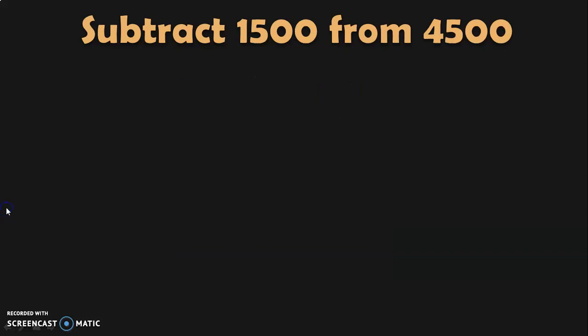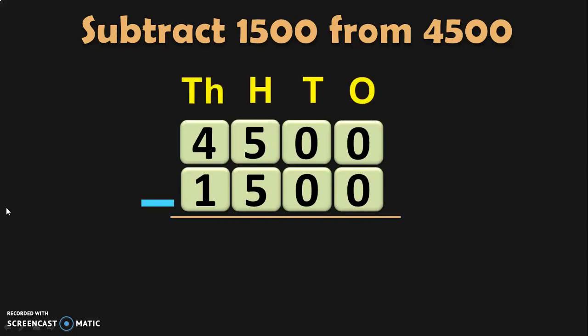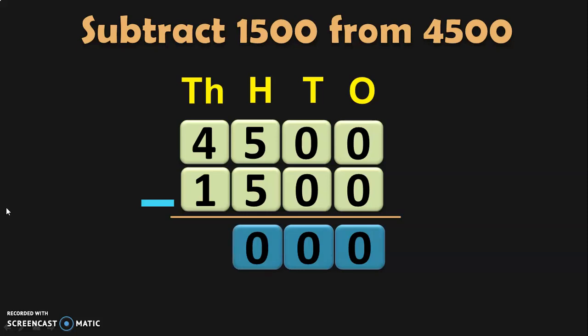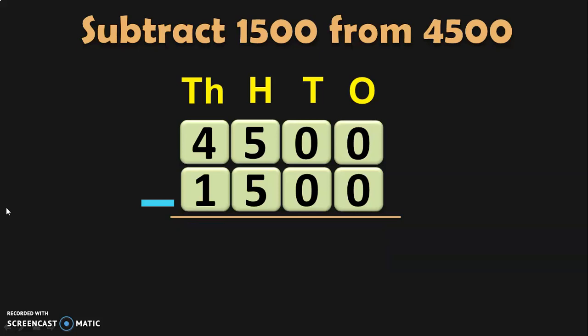Let us do another sum: subtract 1,500 from 4,500. Write the numbers one below the other with place values. Ones: 0 minus 0 is 0. Tens: 0 minus 0 is 0. Hundreds: 5 minus 5 — when you subtract a number from itself, you get 0; this is a property of subtraction. Thousands: 4 minus 1 is 3. Subtracting 1,500 from 4,500 gives the answer 3,000.